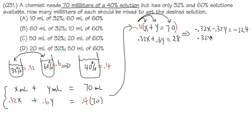You see that negative 0.32x cancels with positive 0.32x, so the x terms are gone. We have just y left: negative 0.32y plus 0.6y gives 0.28y, which equals negative 22.4 plus 28, giving 5.6.